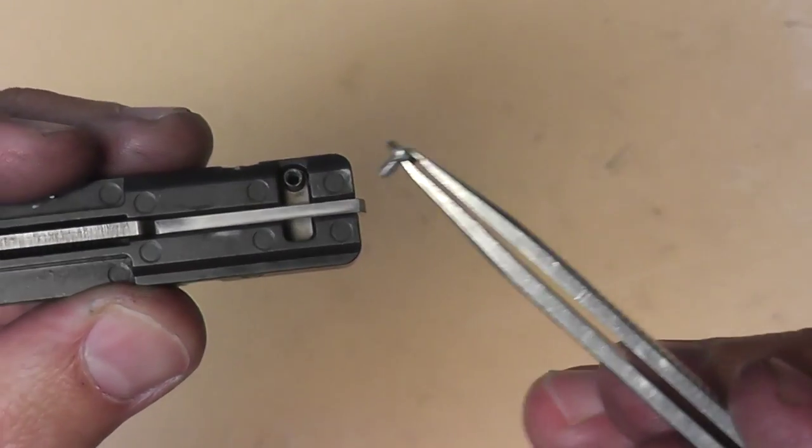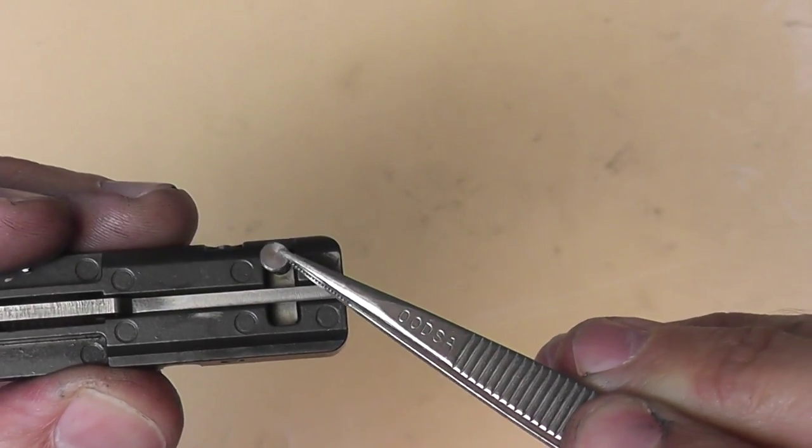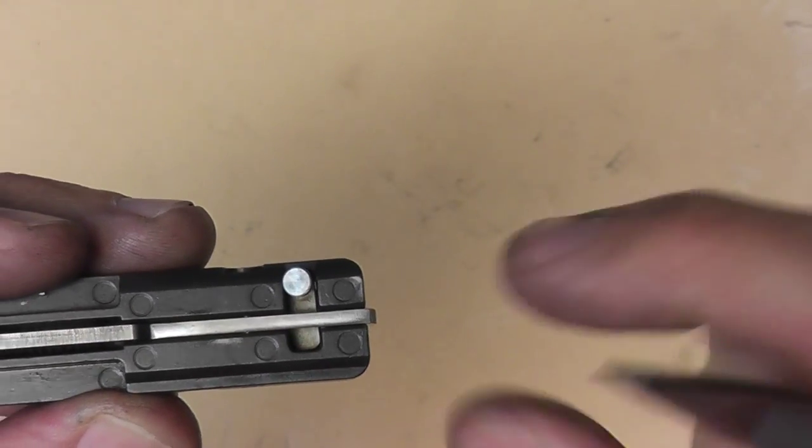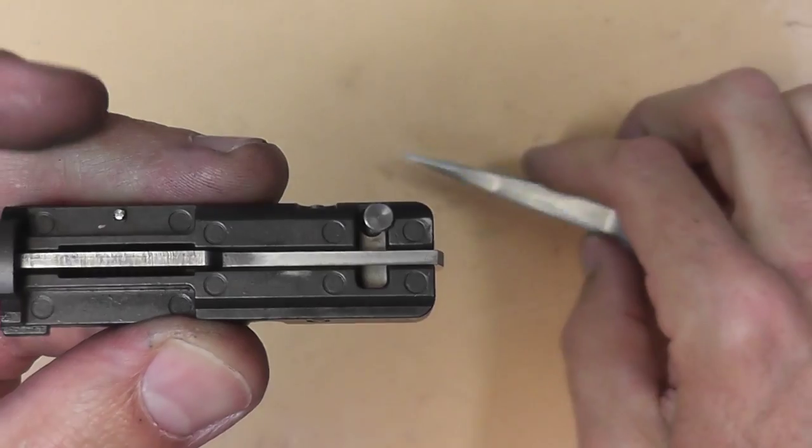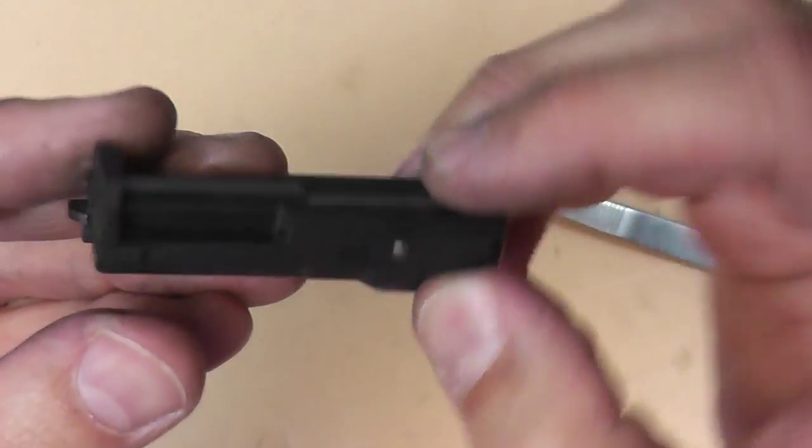And then we take that little screw thing that looks, well, it looks like a screw with no threads on it. We'll take it and drop it right here. This can be the difficult part here, putting this back in the gun, because if you flip this over, the spring and such is going to fall right out.